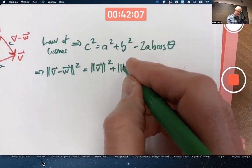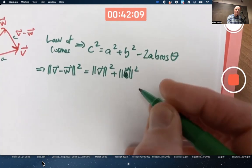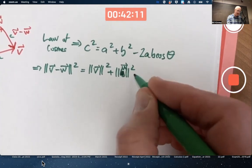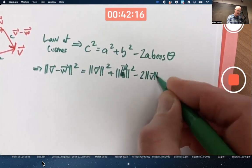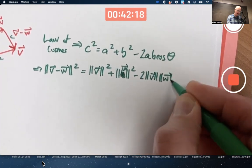Oops, W. And then we have 2AB cos theta. That's 2 times the magnitude of V times the magnitude of W times the cosine of the angle.